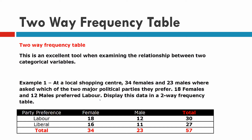Here we've got an example. Example one says that at a local shopping centre, 34 females and 23 males were asked which of the two major political parties they preferred. 18 females and 12 males preferred Labour. Display this data in a two-way frequency table.